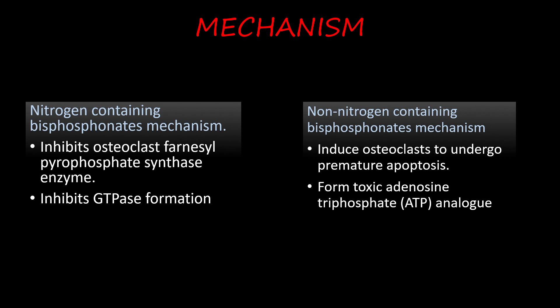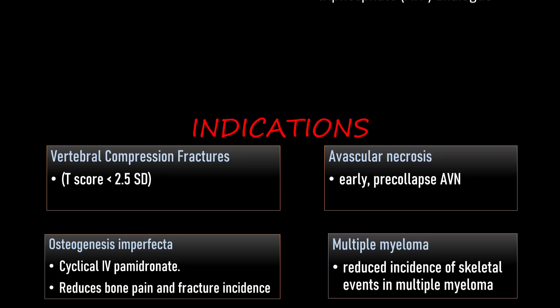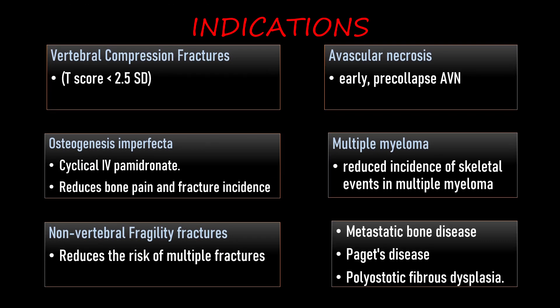Inhibiting farnesyl pyrophosphate synthase prevents GTPase formation. Non-nitrogen containing bisphosphonates induce premature apoptosis of the osteoclasts, and they also form a toxic ATP analog. Bisphosphonates are indicated in a wide variety of orthopedic as well as medical conditions.